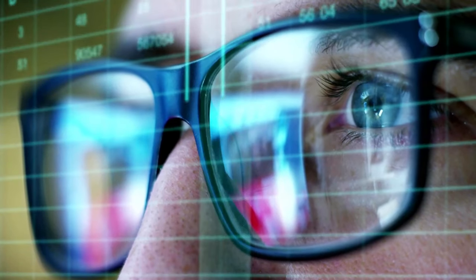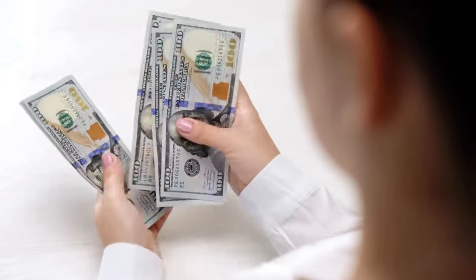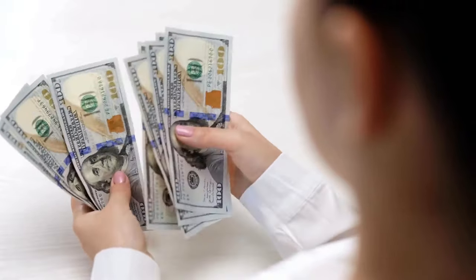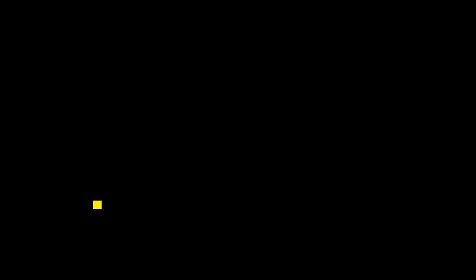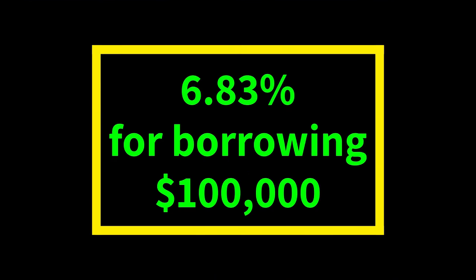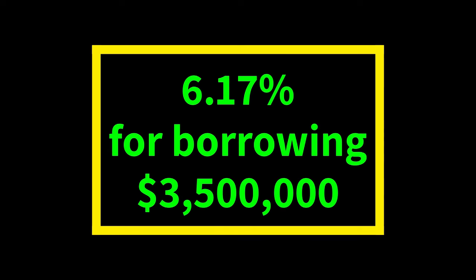Margin is actually borrowed cash. However, brokers do not charge as much as your credit card company would. I have seen 7% to 14% interest rates with different brokers. One of the lowest rates is offered by Interactive Brokers. Their rates are 6.83% for borrowing $100,000. The rates go slightly down as you borrow more money — your margin rate will be 6.17% for borrowing $3.5 million.